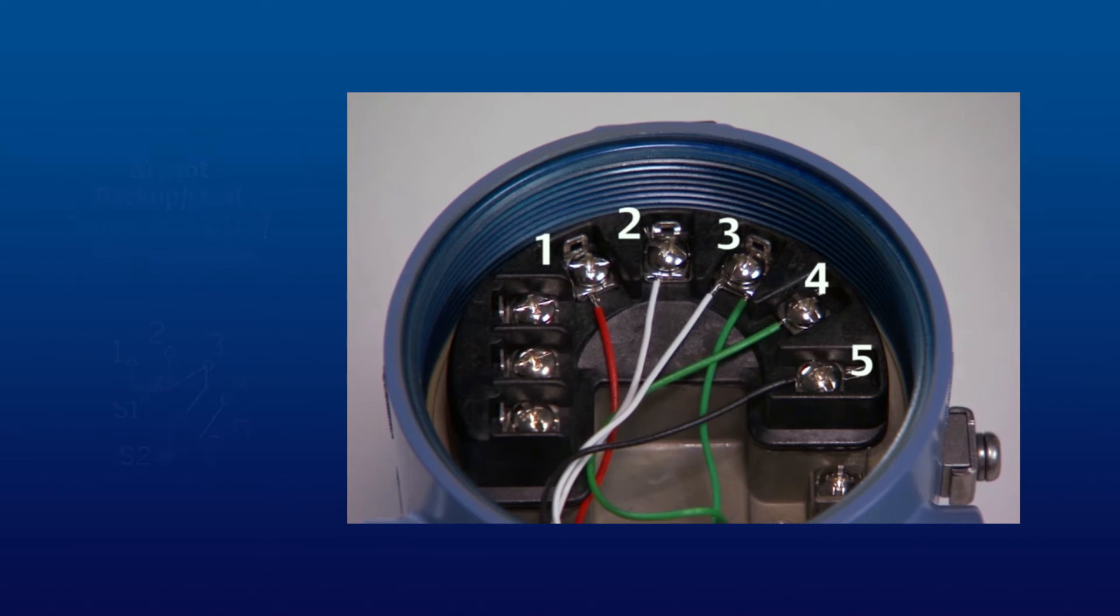Here is the correct wiring when using two 3-wire RTDs. Note that for the first RTD, the single red wire is attached to terminal 1, and the two white wires are connected to terminals 2 and 3.